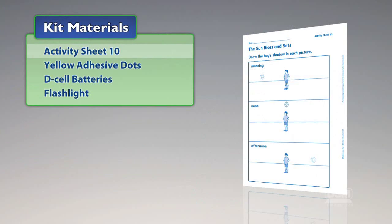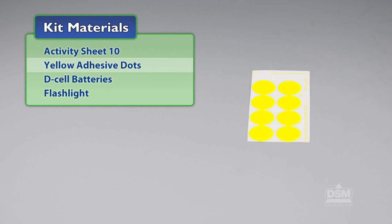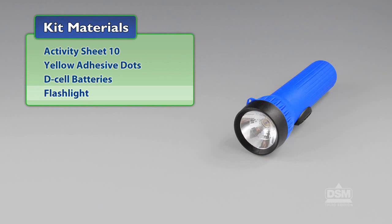You will need the following materials from the kit: Activity Sheet 10, Yellow Adhesive Dots, D-Cell Batteries and a Flashlight.